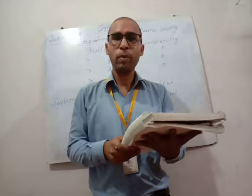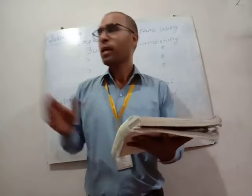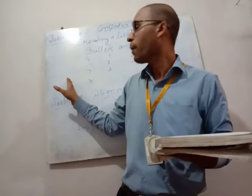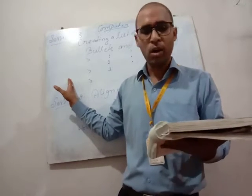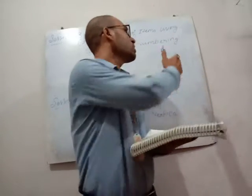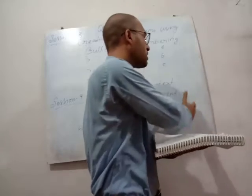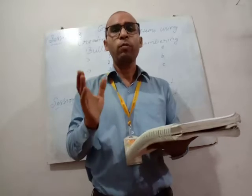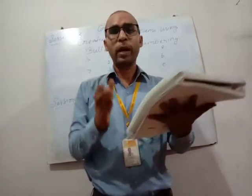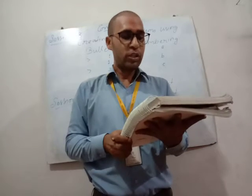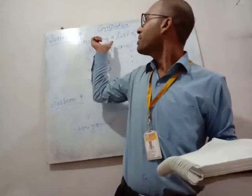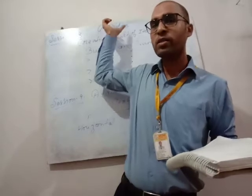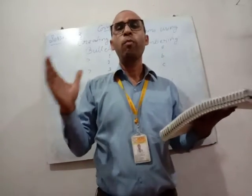There are four types of horizontal text alignment. First, align text left — text starts from the left side. Second, align text to the right — your paragraph is adjusted to the right side. Third, center — your paragraph and text are centered. Fourth, justify — the left and right margins are both adjusted evenly.